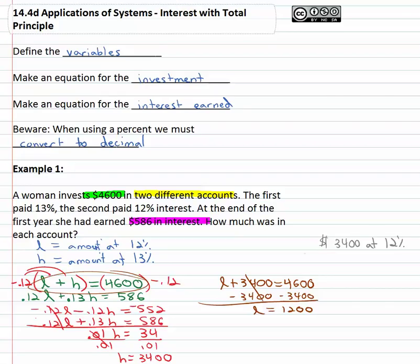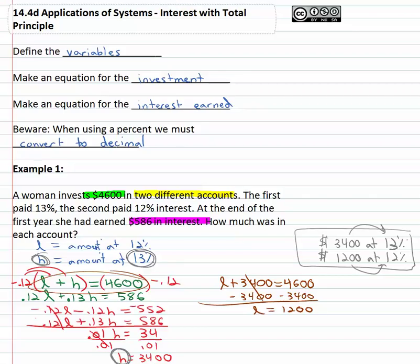L is the amount at the lower interest rate — twelve hundred dollars is at twelve percent. H is the amount at the higher interest rate — thirty-four hundred dollars is at thirteen percent. So thirty-four hundred dollars at thirteen percent and twelve hundred dollars at twelve percent.